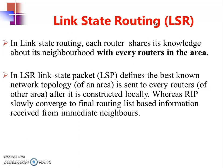Link state routing shares its knowledge about its neighborhood with every router in that area — not only immediate neighbors but all routers in that area. So eventually each and every router on the network is aware of the full scenario. DVR is one type of routing and link state routing is another type, and you need to understand this difference between the two.